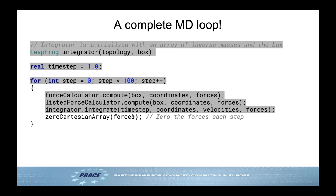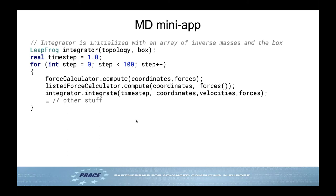You need to zero the forces between every step because both the bonded and non-bonded force calculators add forces on top of the existing buffer. You can of course also add your own custom forces on top or do whatever else you might imagine within the loop.